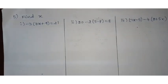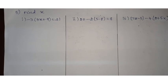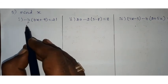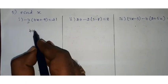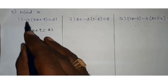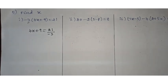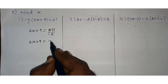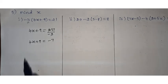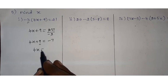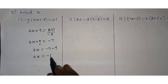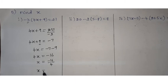Section V, first sum: minus 3 into bracket 4x plus 9 equals 21. Here minus 3 is in multiplication with the whole bracket, so bring it to the other side as divide: 4x plus 9 equals 21 divided by minus 3, which is minus 7. Now bring plus 9 to the other side: 4x equals minus 7 minus 9 equals minus 16. Therefore x equals minus 16 divided by 4, so x equals minus 4.